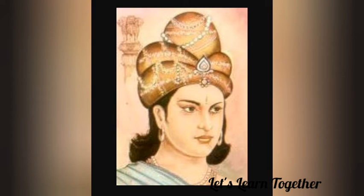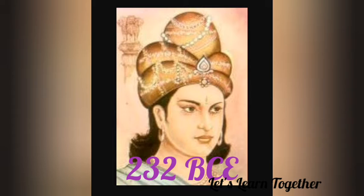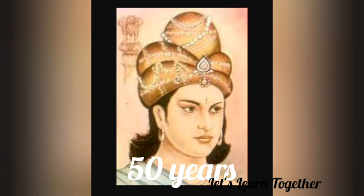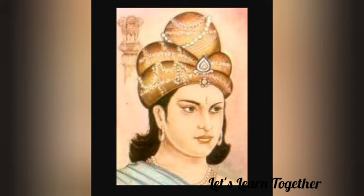Ashoka died in 232 BCE. The dynasty continued for another 50 years, but the empire ceased to be strong and powerful. There were many reasons for the decline.